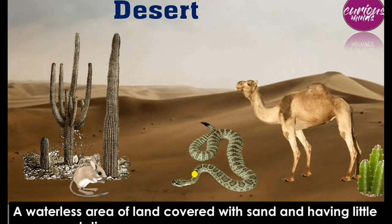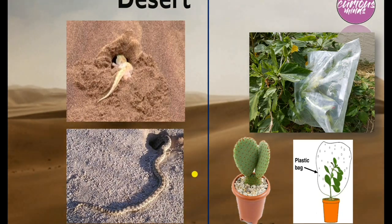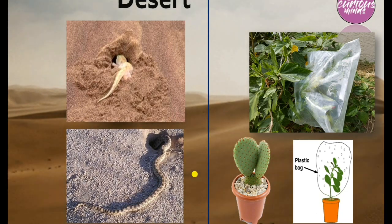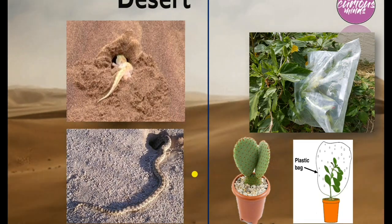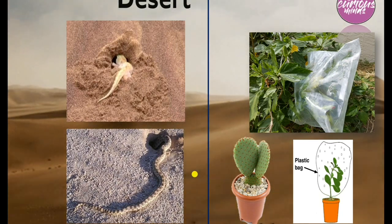In cactus plants, photosynthesis occurs through the stem rather than the leaves, so that water loss is minimized. An activity demonstrates this: a plastic bag placed over a large-leafed plant collects a lot of water due to transpiration, while a bag over cactus collects very little because its small or spine-modified leaves minimize transpiration. Snakes stay in deep burrows or holes during the day to protect their body from heat.